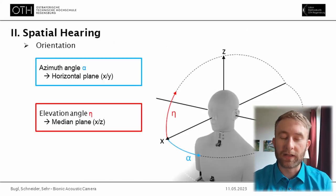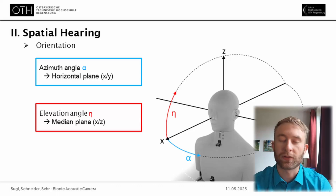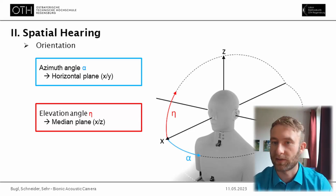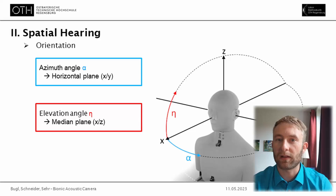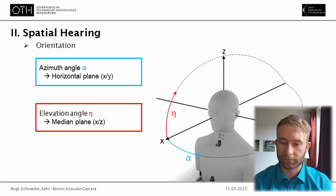Talking about spatial hearing, first a little bit of orientation. There is the azimuth angle, which tells me whether something is to the left or to the right in the horizontal plane, and there is the elevation angle, which basically tells me if something is up or down in the median plane, which is the plane in front of our nose.